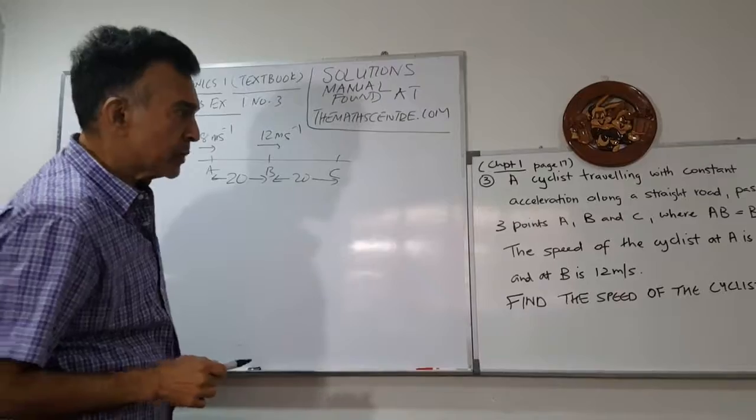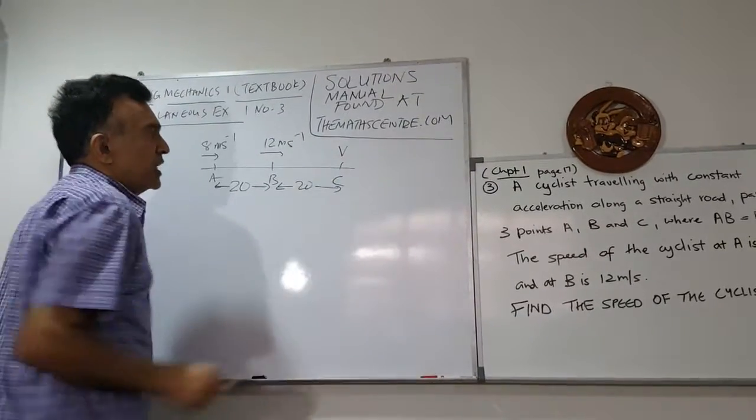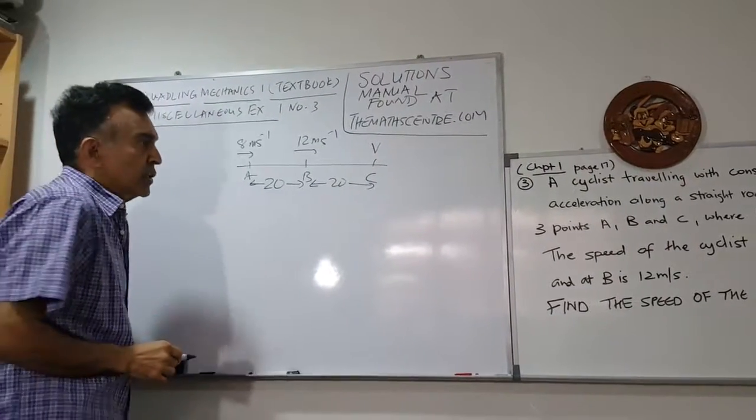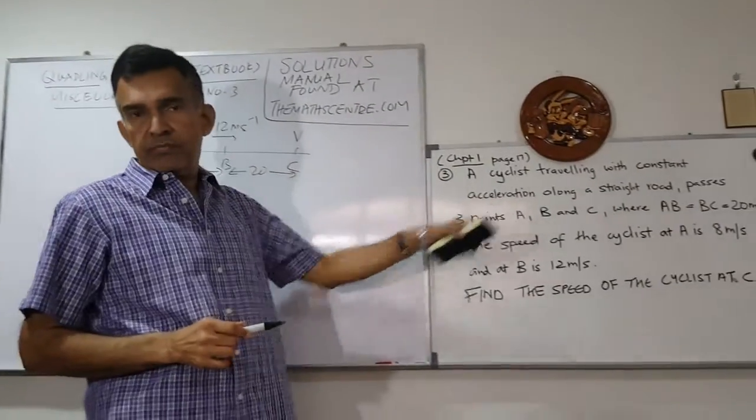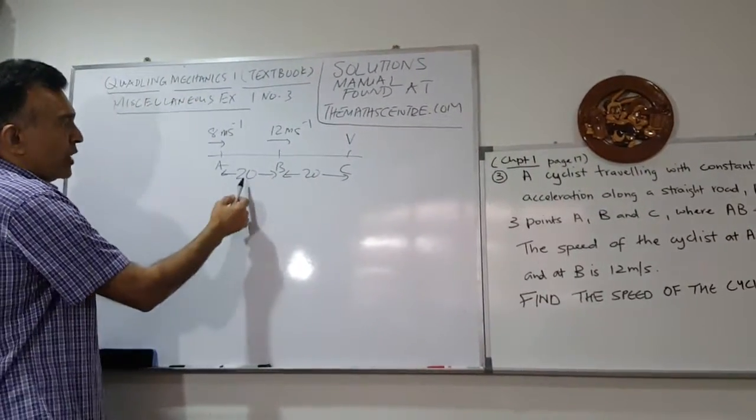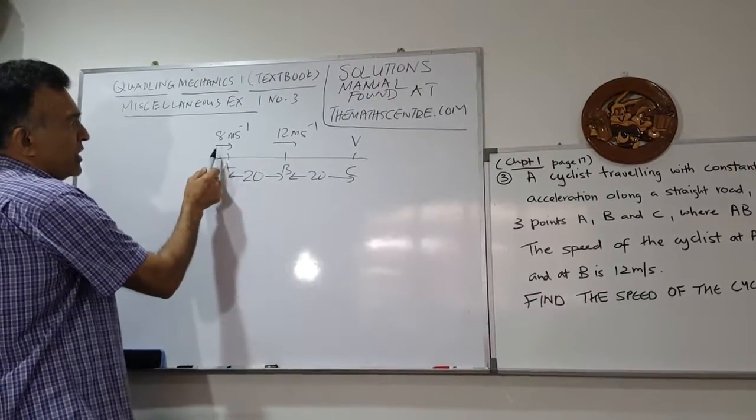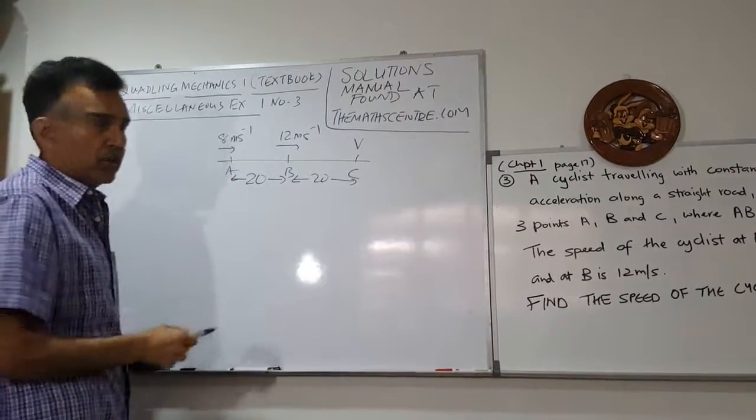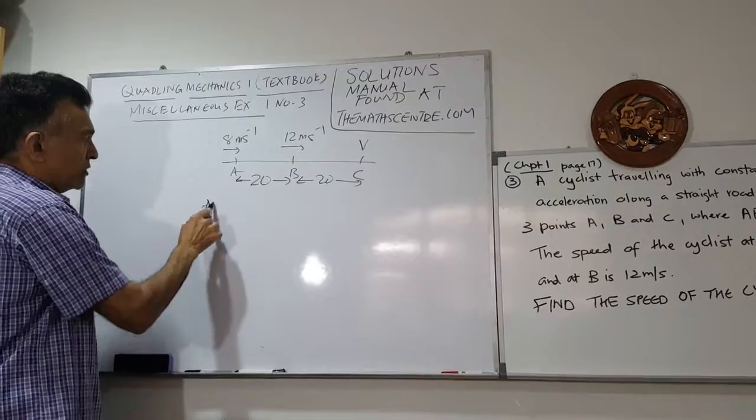We have to find the speed of the cyclist at C. We're dealing with constant acceleration, so we can use the constant acceleration formulas. We have the distance of 20, the initial velocity, and the final velocity. Let's consider AB now.